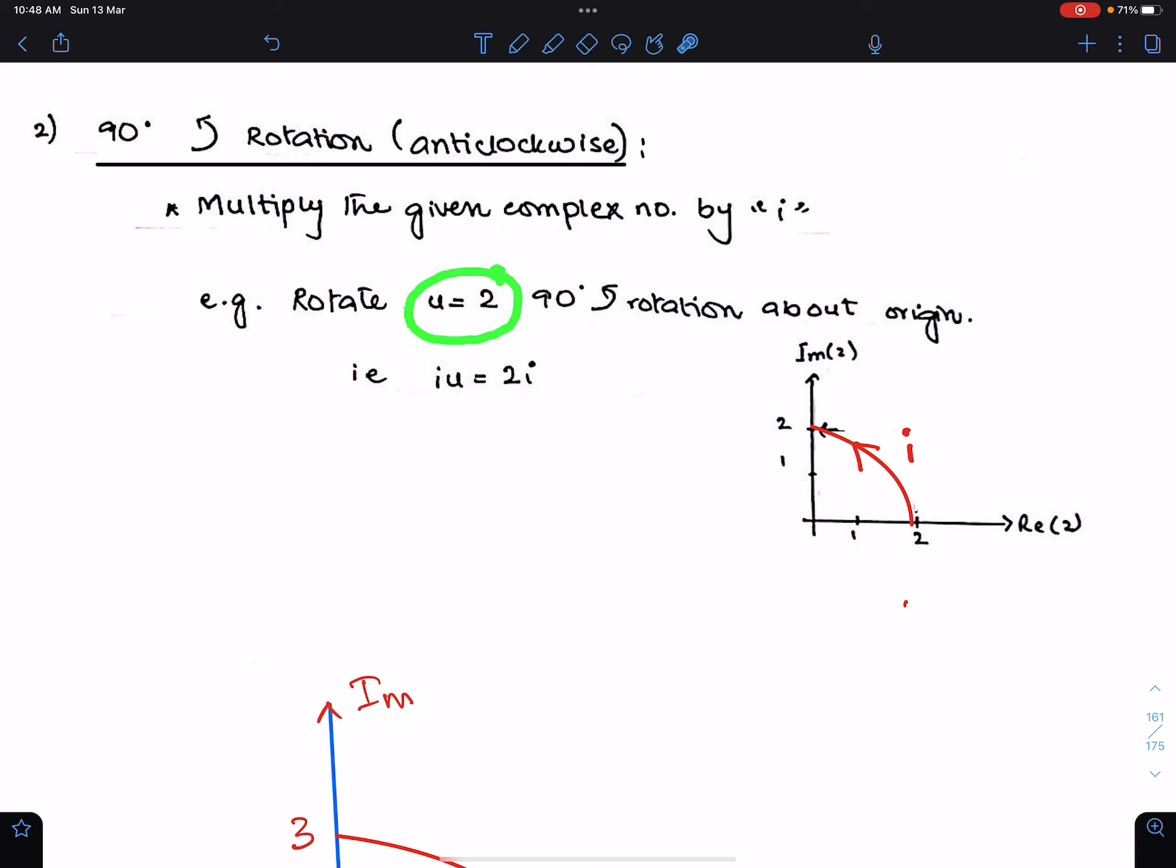For example, rotate u equals 2, 90 degrees anticlockwise about origin. This 2 is here. When this is rotated 90 degrees in anticlockwise direction about the origin, then this 2 will come here.